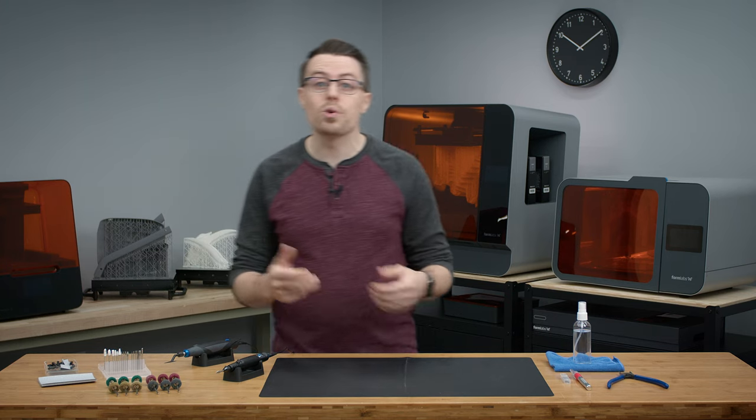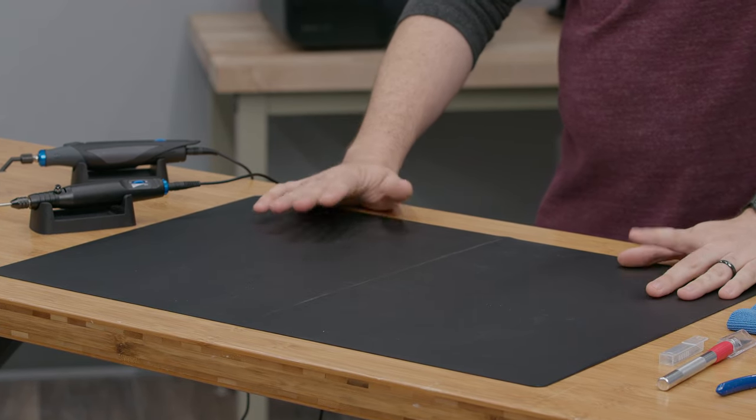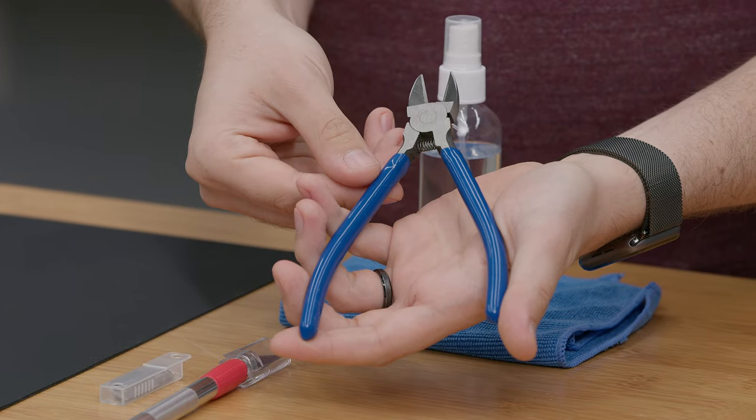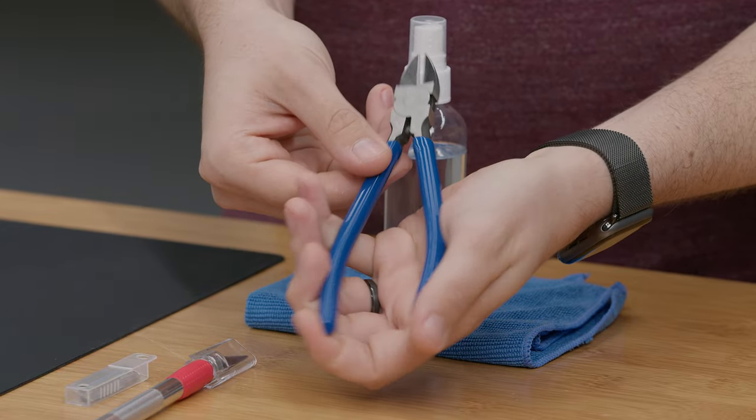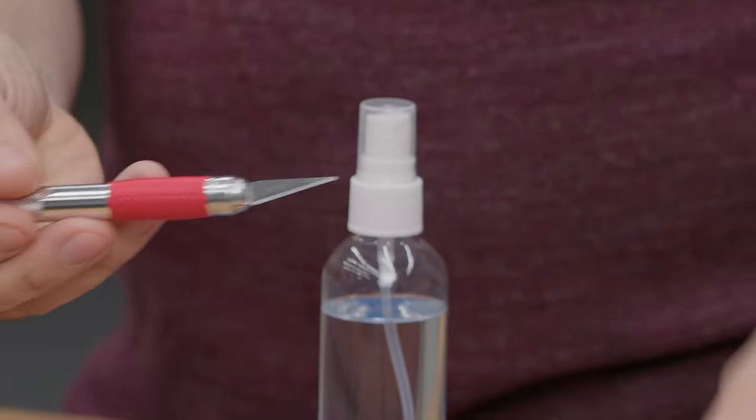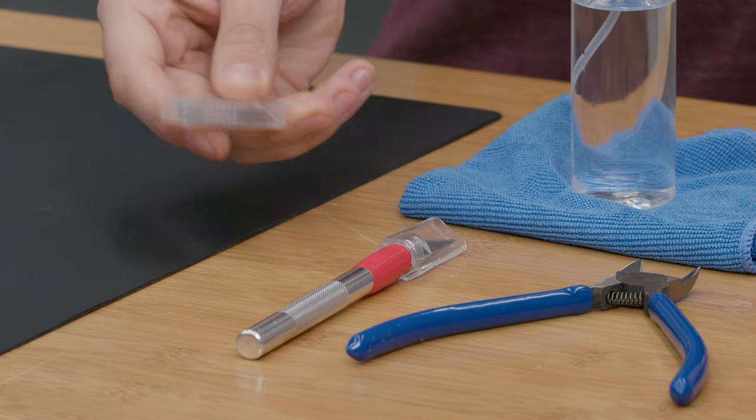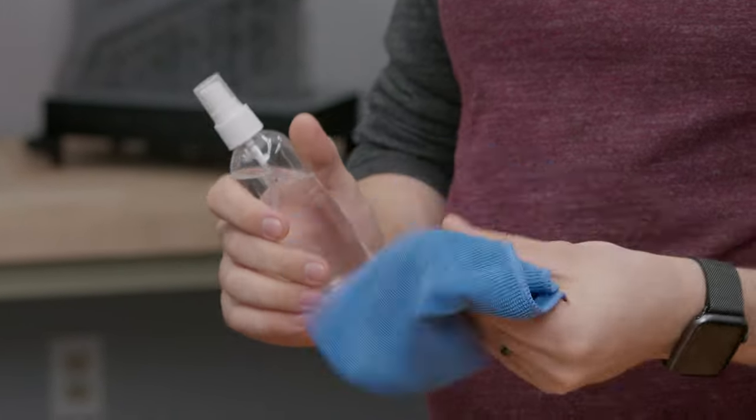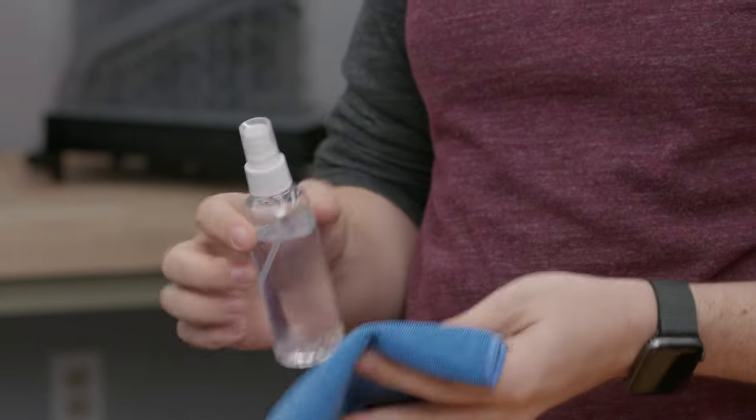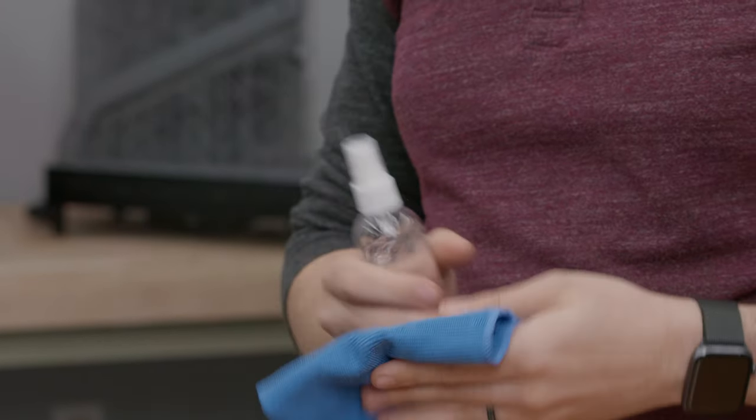We also include a silicone working mat that will keep your workspace clean and free from debris, dust, and resin. Larger, more heavy-duty flush cutters that will stand up to resin buildup and spring back to action. A heavy-duty hobby knife that includes a few different attachments for different shapes to help you remove supports. And lastly, we have a microfiber cleaning cloth to help you wipe up any dust and debris, and a spray bottle for either isopropyl alcohol or mineral oil for finishing your parts.